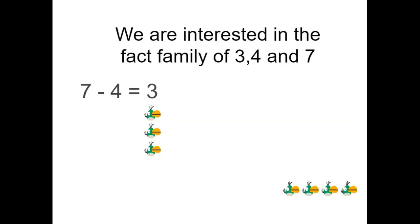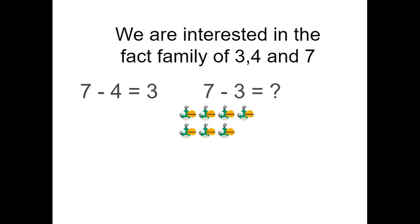Now, there's one more fact family relationship for subtraction. And here it is. We start with 7 birds. We take away the group of 3. And that leaves us with 4. So, did you notice all of the relationships use the same numbers? And that's what fact families do. They relate for us 3 numbers together.